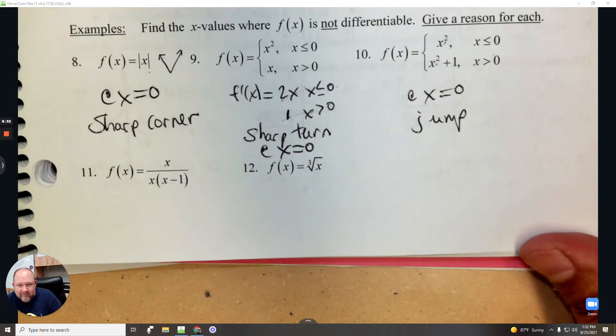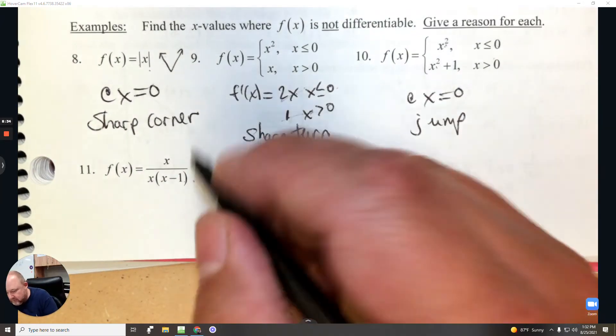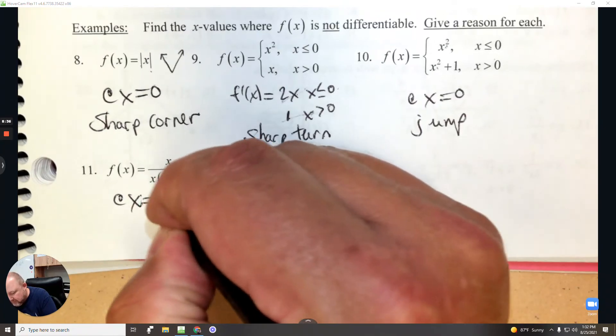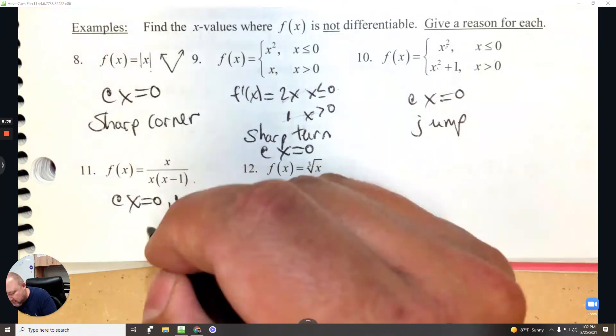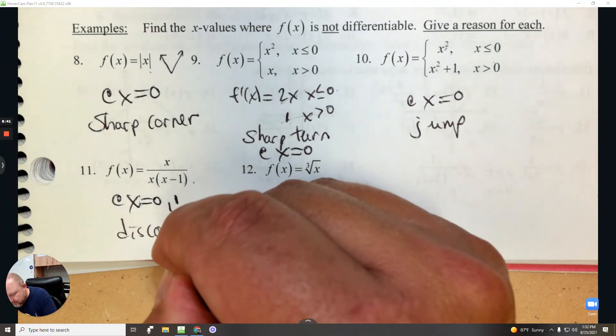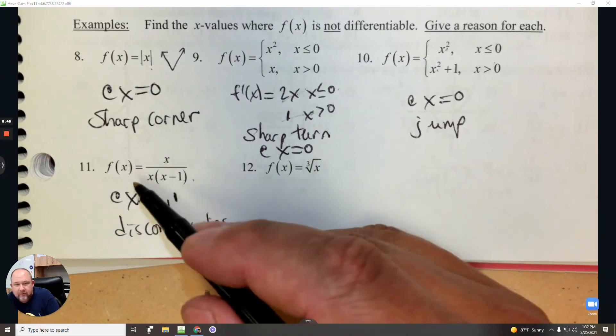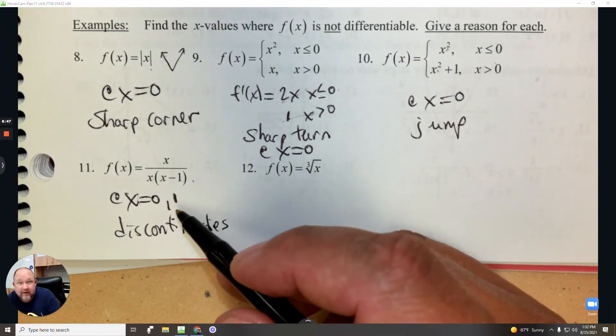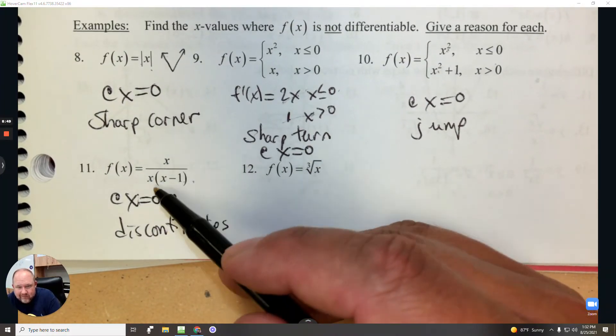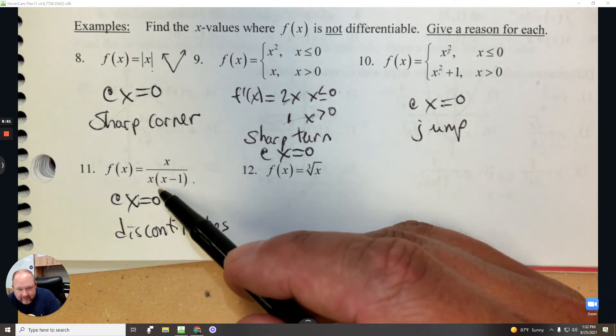For number 11, where it's not continuous. So at x equals 0 and positive 1. So 0 is a hole and positive 1 is an asymptote. But you can't take the derivative at holes and asymptotes.